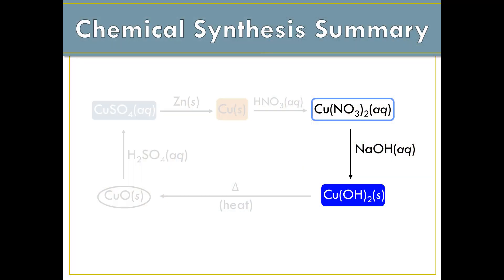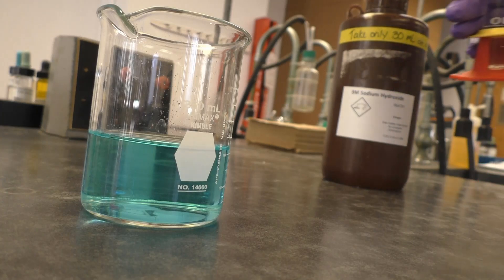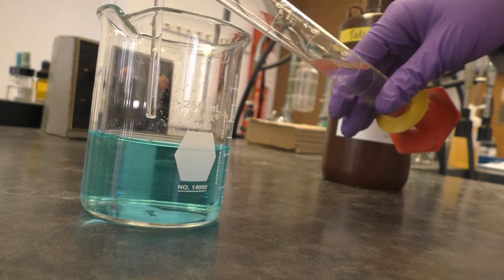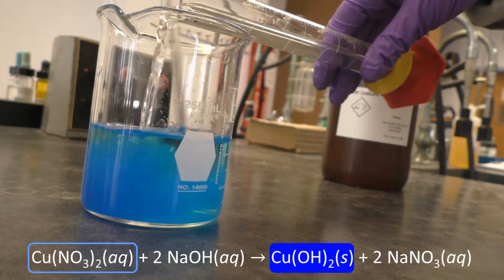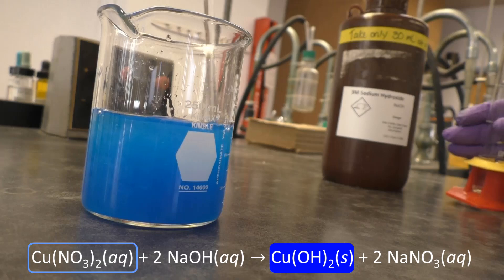The next step in our synthesis is to take our newly formed copper-2-nitrate and convert it to copper-2-hydroxide via an ionic metathesis reaction. To do so, all you need to do is add 30 milliliters of 3 molar sodium hydroxide. At this time, you should see a nice royal blue precipitate form. This is the desired copper-2-hydroxide product.